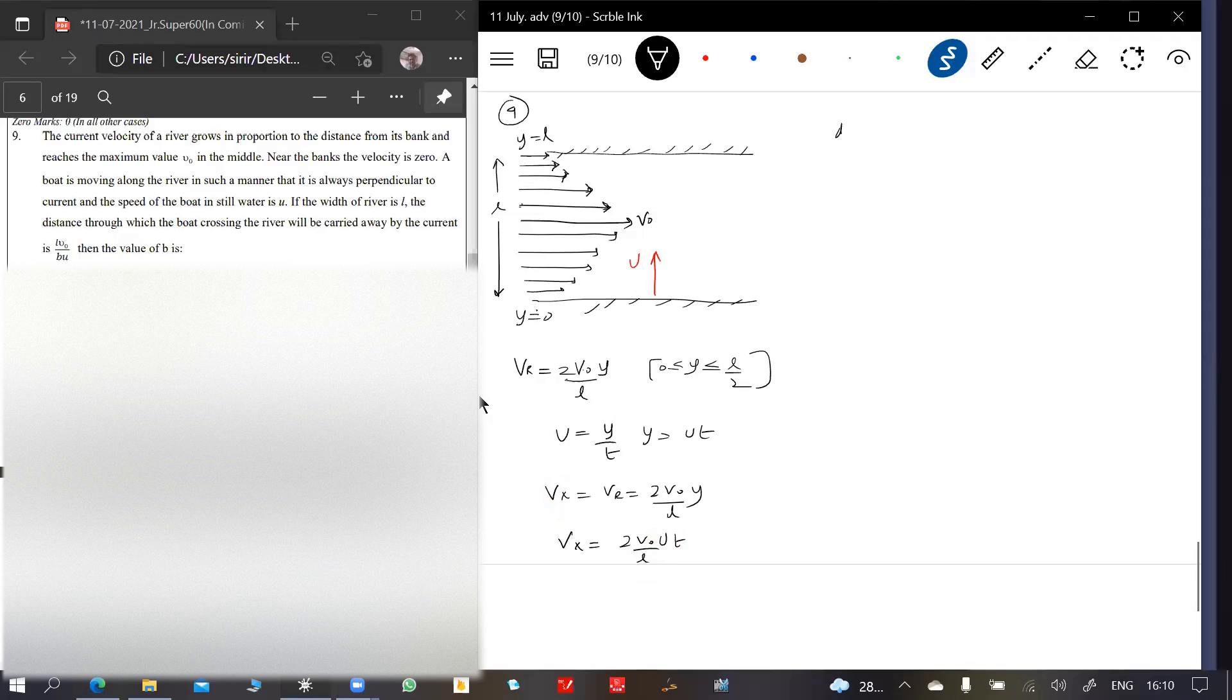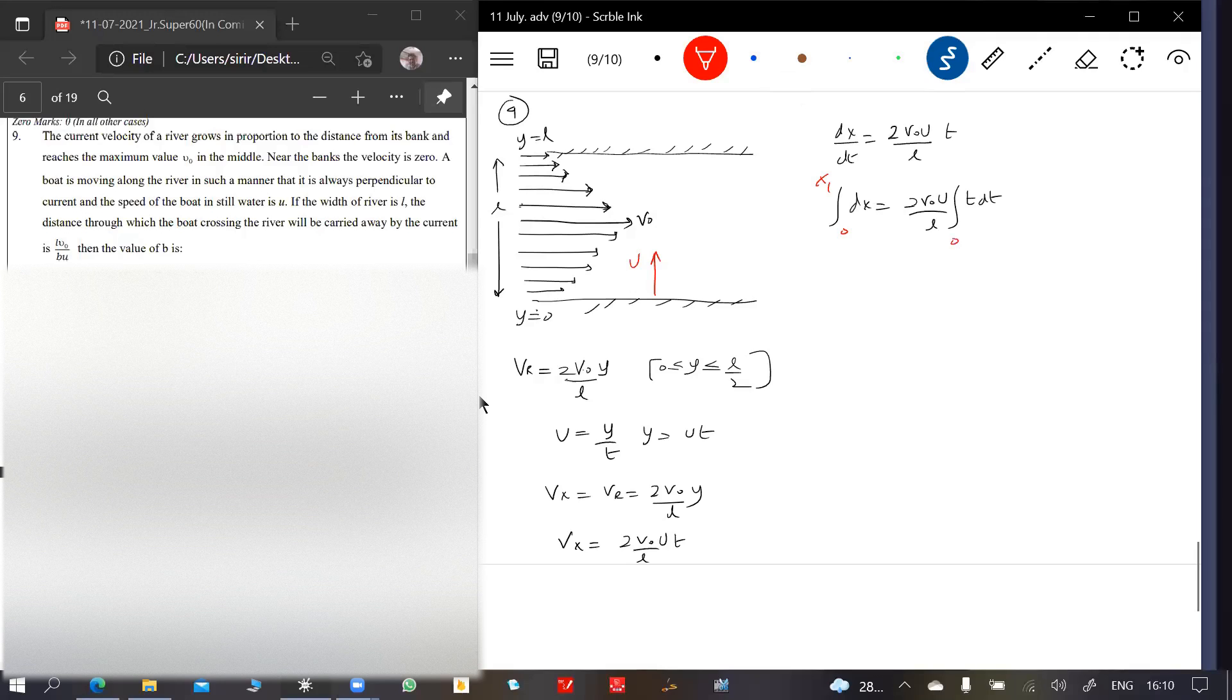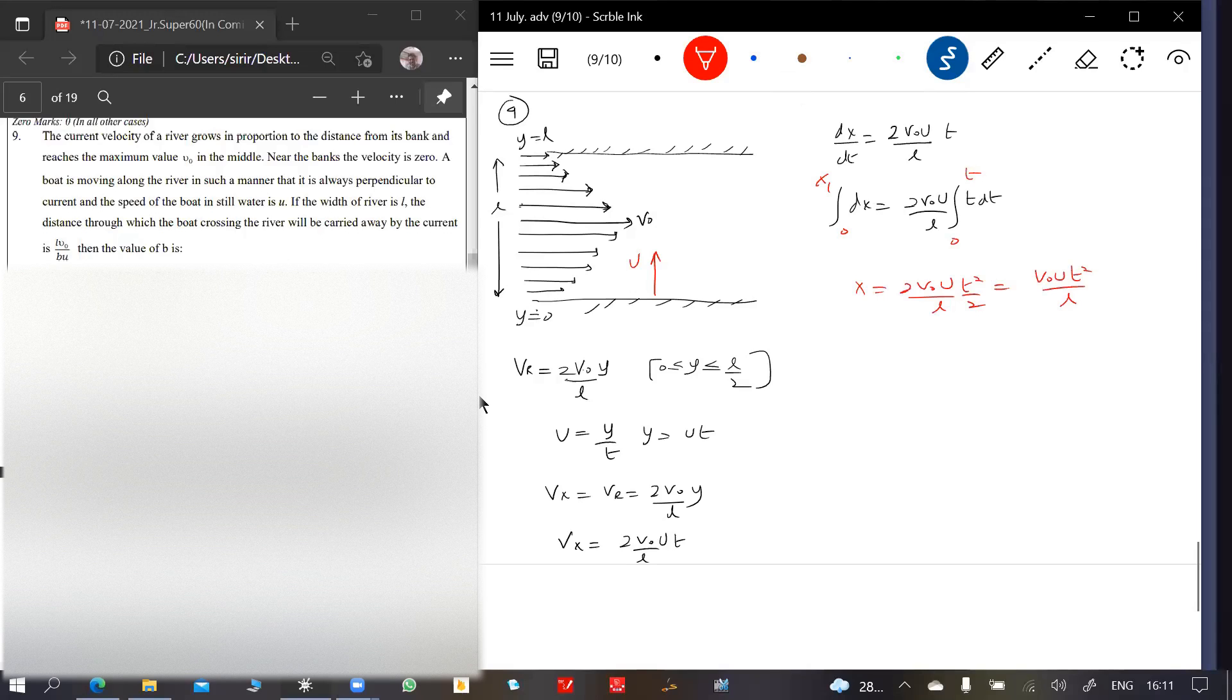Vx is dX by dT, so we write it: 2V0U by L T. 0 to drift, X, integrate. X is equal to 2V0U by L, T square by 2, so V0U T square by L. This is X. What is in fact T? T is a function of, let me bring it here.